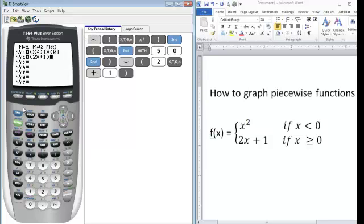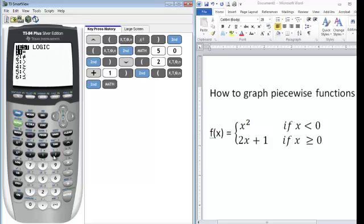We want to put brackets around our domain. Here we want x ≥ 0, so once again, we need to go back to the test menu, and we want option number 4.